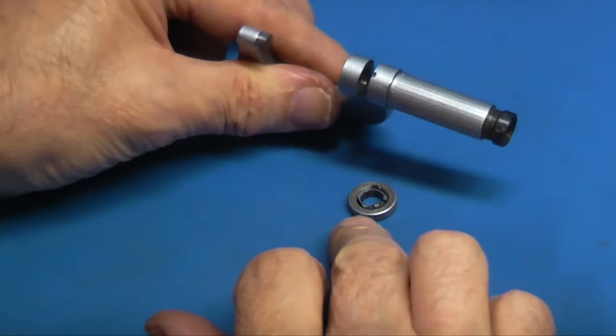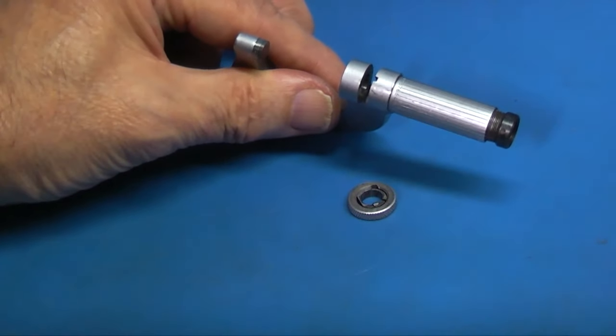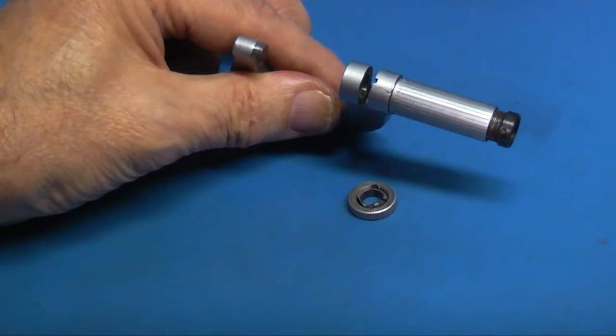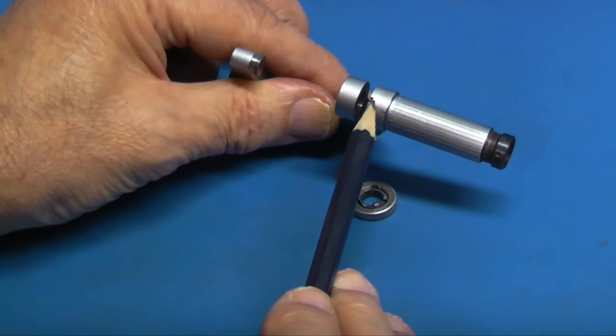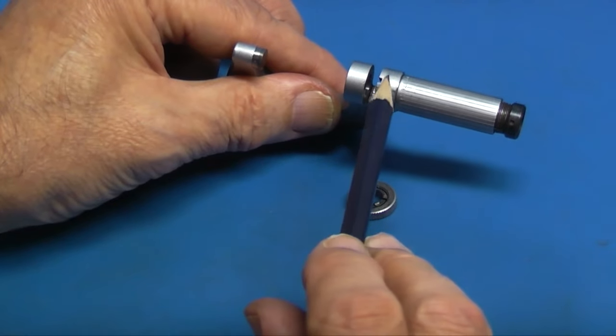When you reassemble the lock system onto the micrometer, you can see on the top of the micrometer there's a slot there and there's a little peg on the ring that goes into that slot.